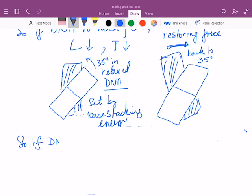So if DNA is not held flat, but the ends still cannot rotate, it's just that the DNA can flex between these ends.